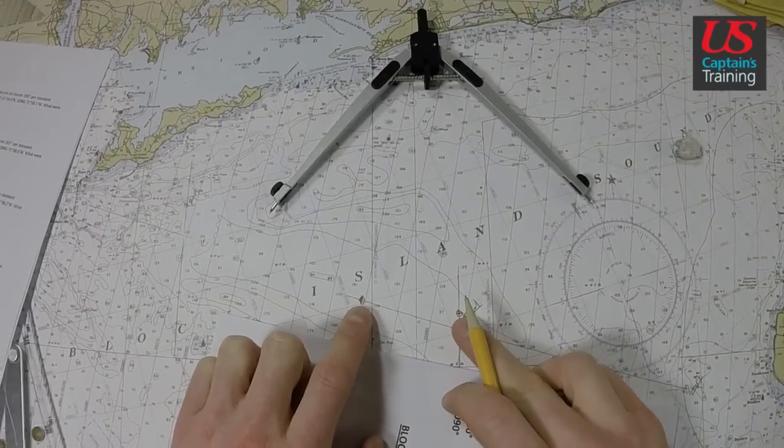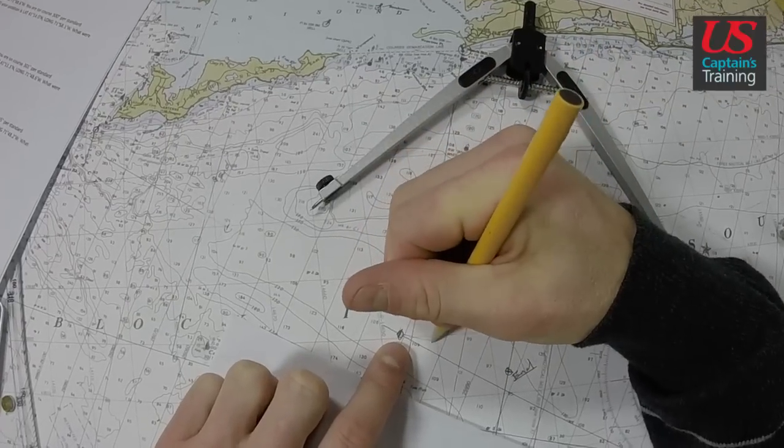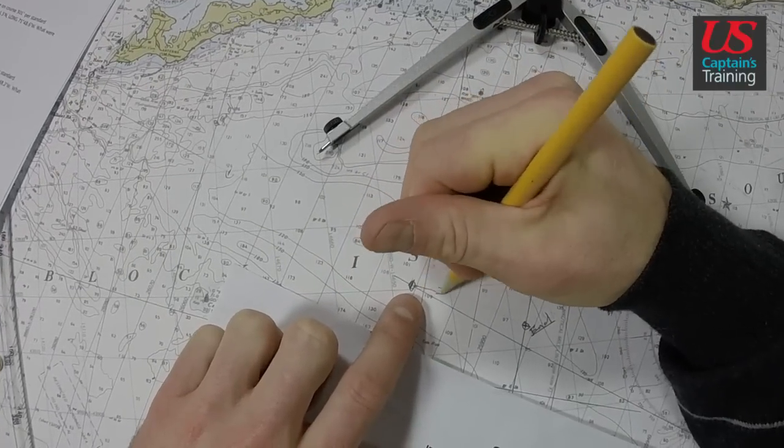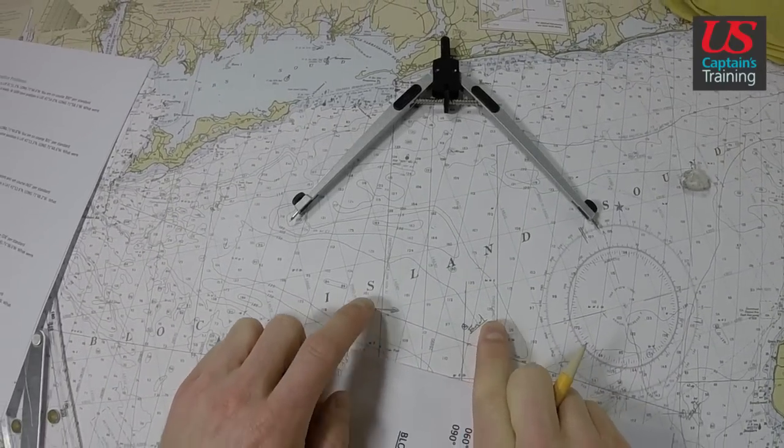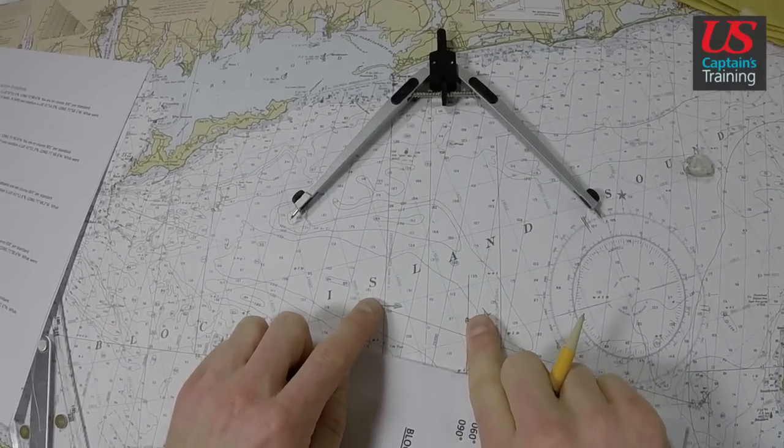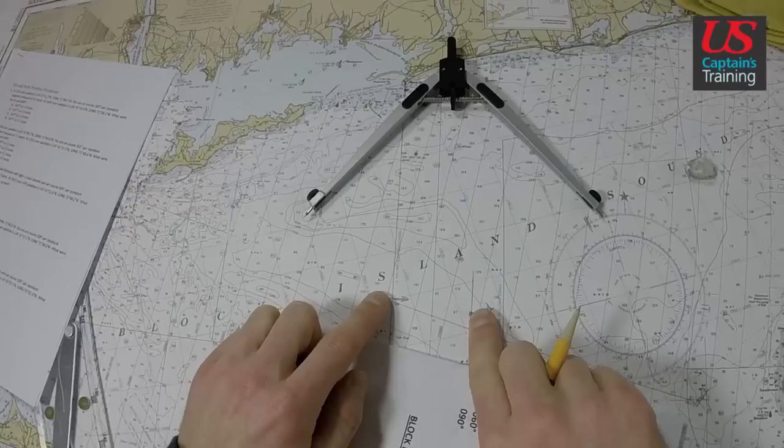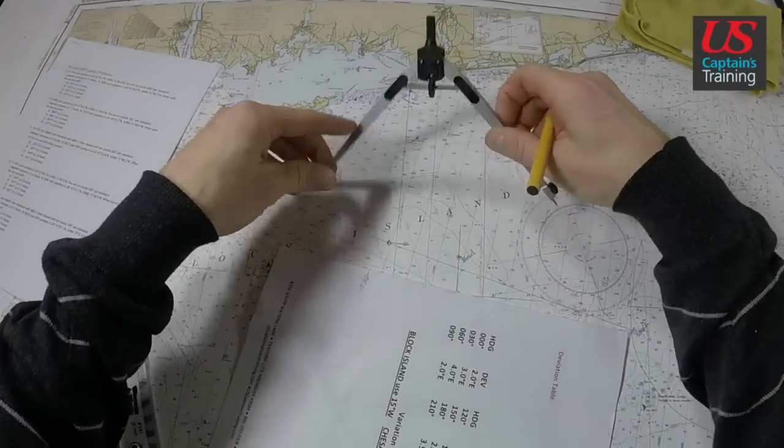But we actually ended up here. A current pushed us this way. Right? The current affected us at this number of degrees, which is the set. And this distance divided by the time it took is the drift, or the speed that it pushed us.